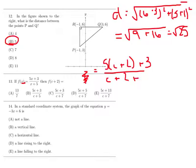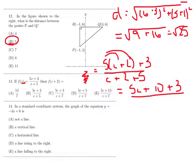And I could put parentheses around it if I wanted to, but it's not necessary, plus 5. So that's 5c plus 10, and then we still have our plus 3, and then c plus 7, and then combine like terms. So 5c plus 13 over c plus 7.